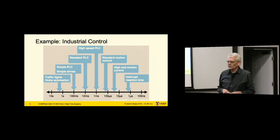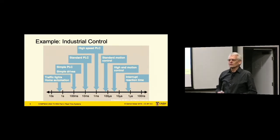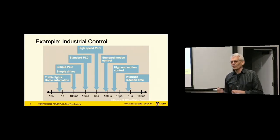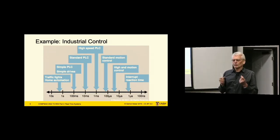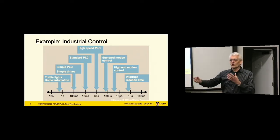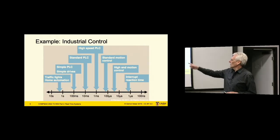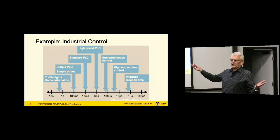Here's an example from a Siemens document showing their view of timelines in industrial control systems. They go from multiple seconds for traffic control — whether the traffic light switches a second sooner or later, who cares — to simple PLC (programmable logic controller) programming ranging from 100 milliseconds to one millisecond. Motion control in robotics: 100 microsecond scale. If really fast, down to 30 microseconds. That's basically the timescales we're looking at.